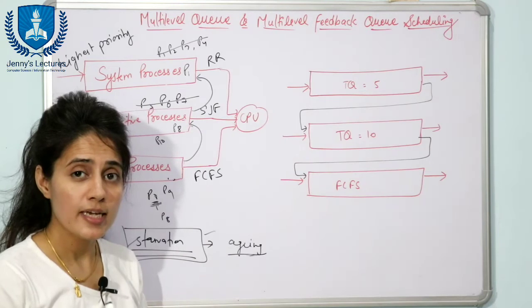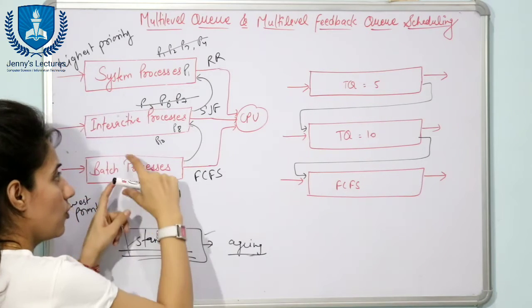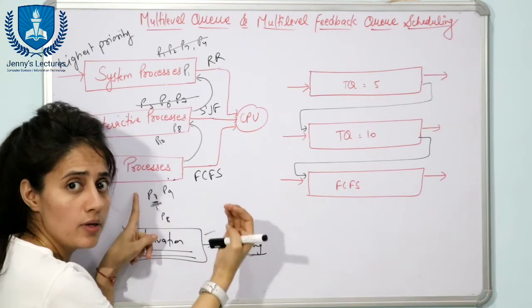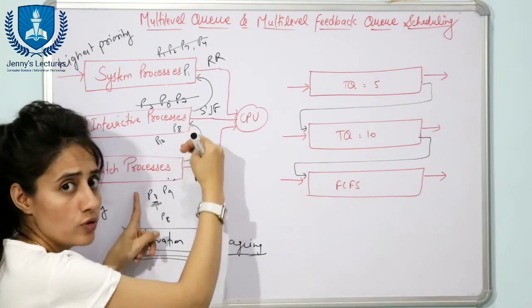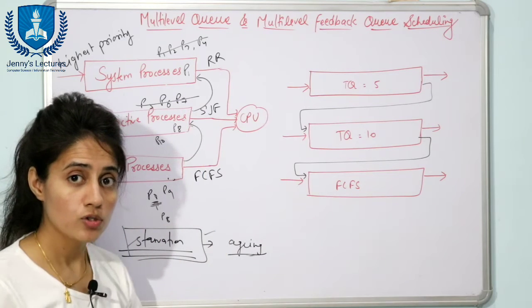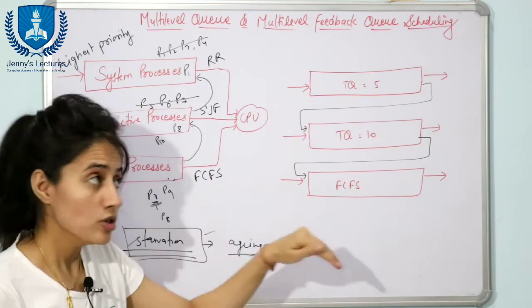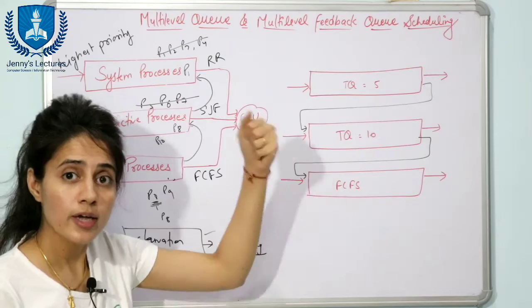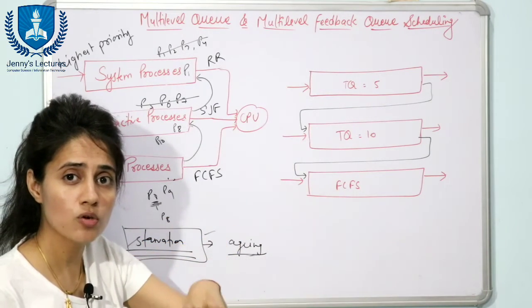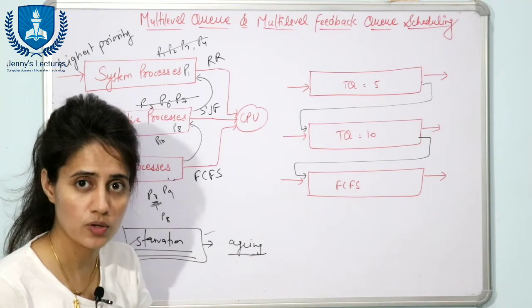In multi-level feedback queue scheduling, processes from a lower-priority queue can be promoted to a higher-priority queue. Additionally, processes from a higher-priority queue can be demoted to a lower-priority queue. Both promotion and demotion are possible in multi-level feedback queue scheduling.